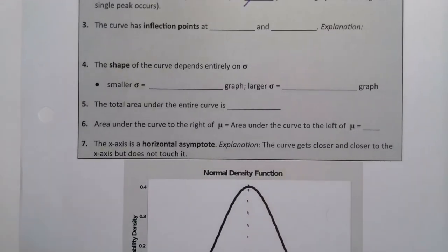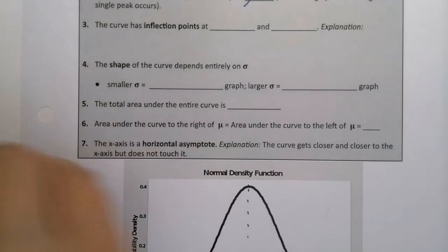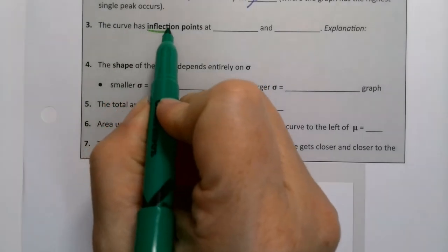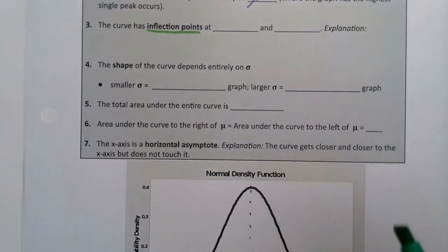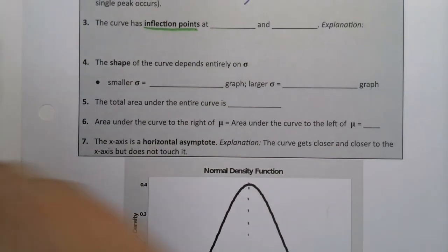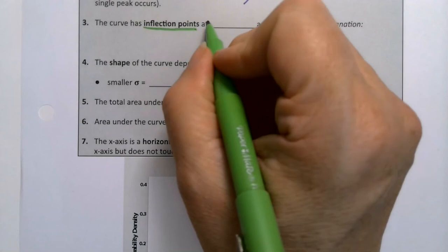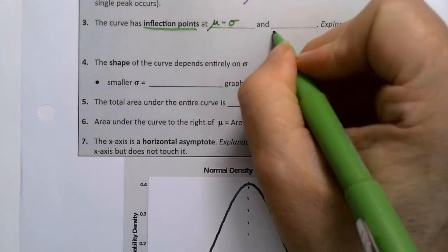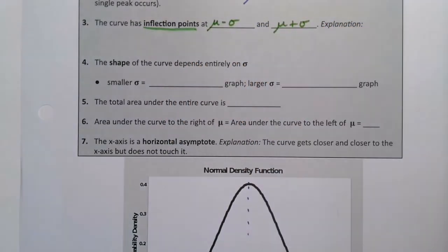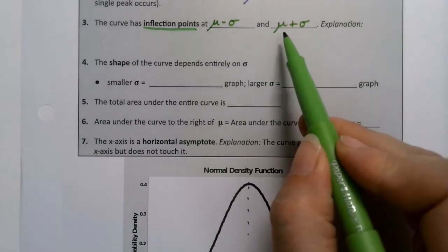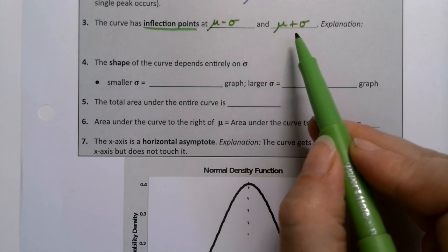Now, the curve has inflection points, and we've seen these before. We talked about these back in the empirical rule days. Those inflection points happen at the mean minus a sigma and the mean plus sigma. So if you add on, subtract away a standard deviation, you get one inflection point.